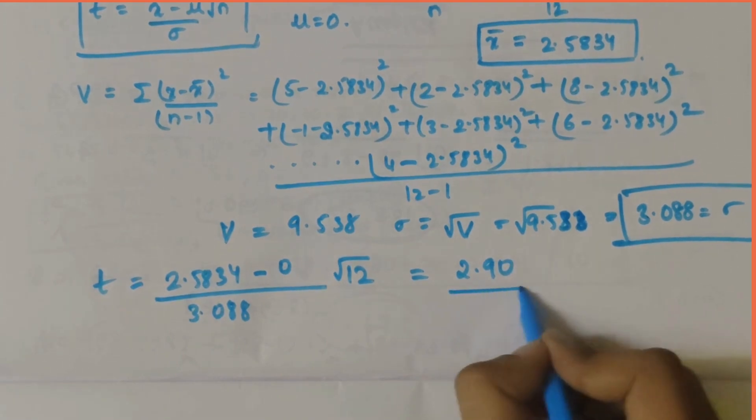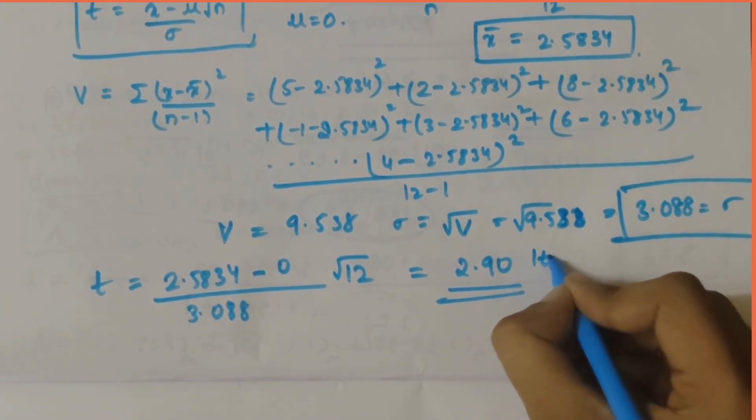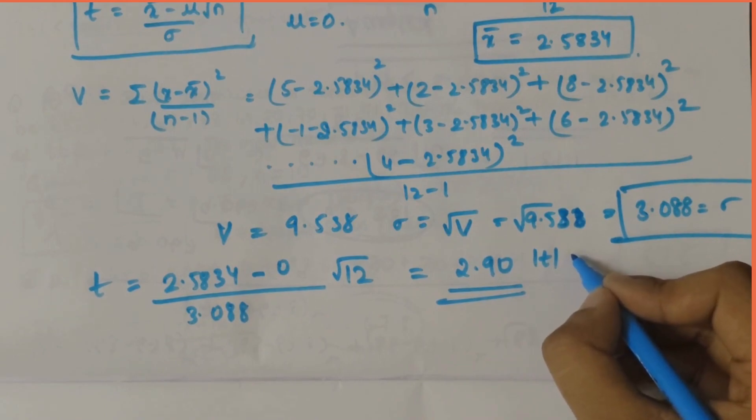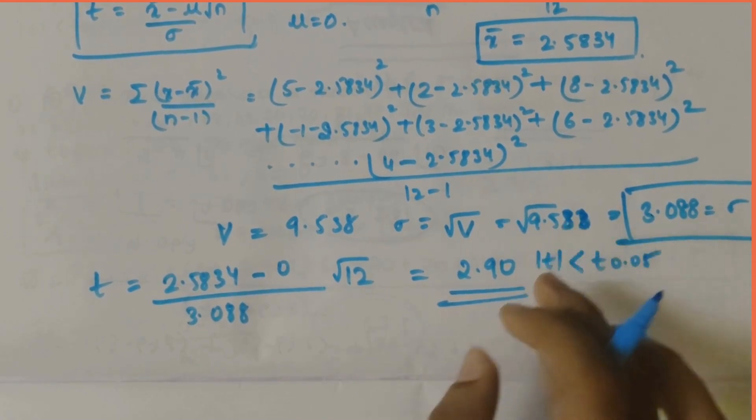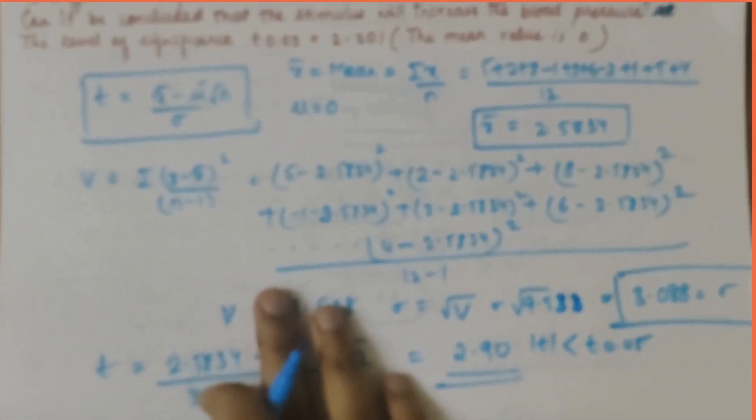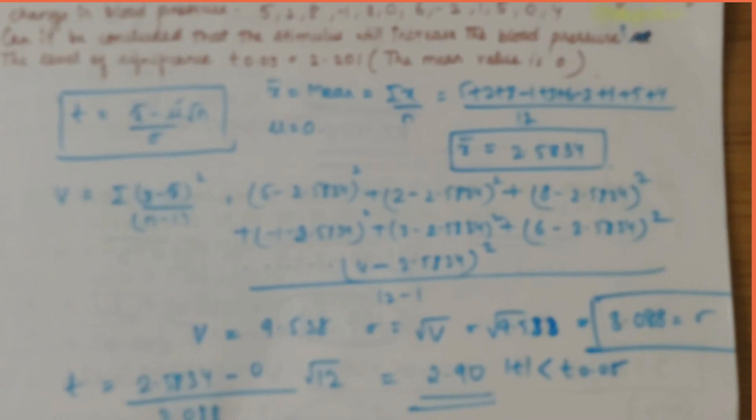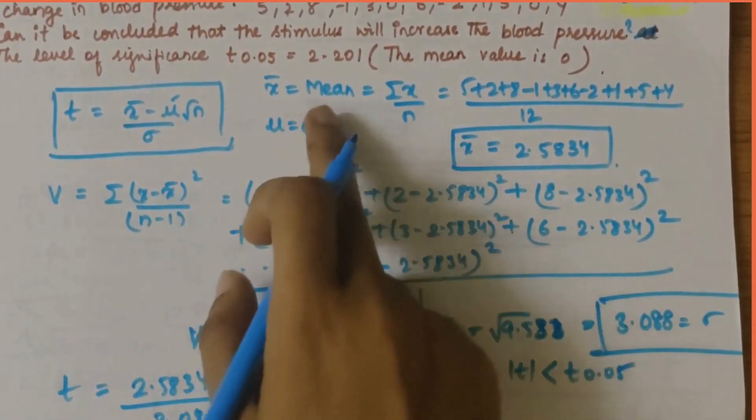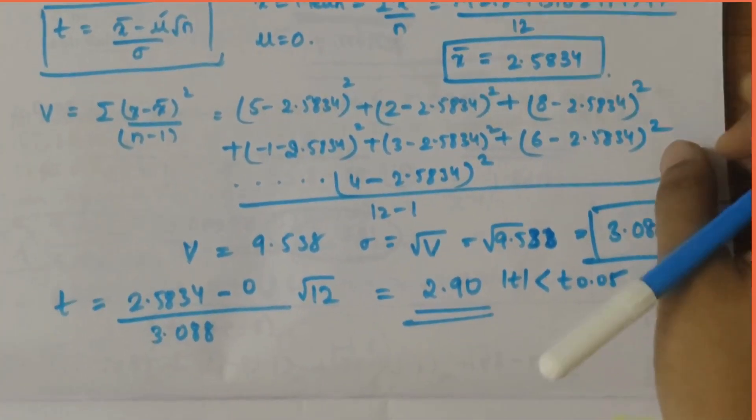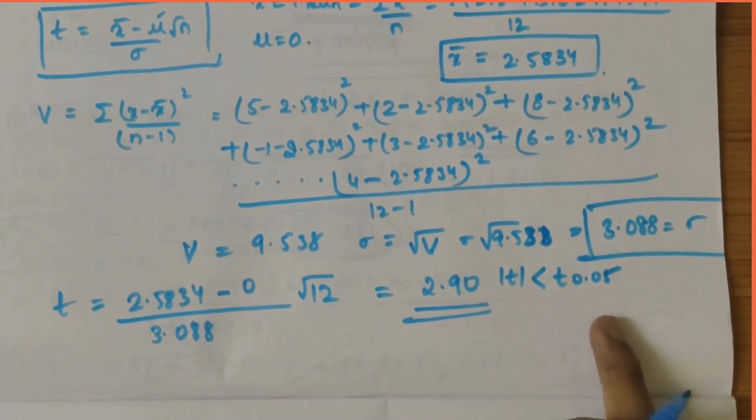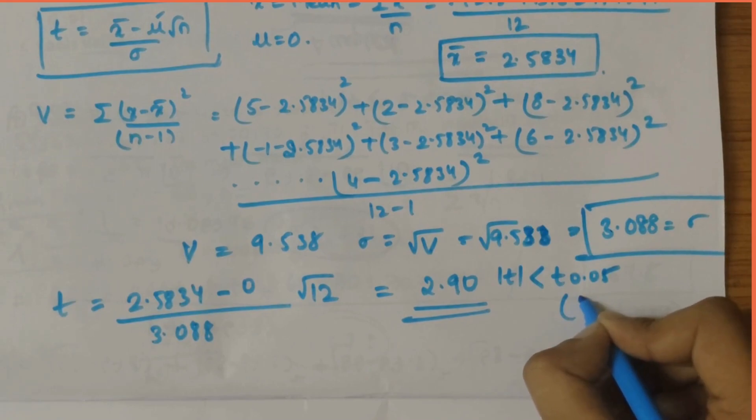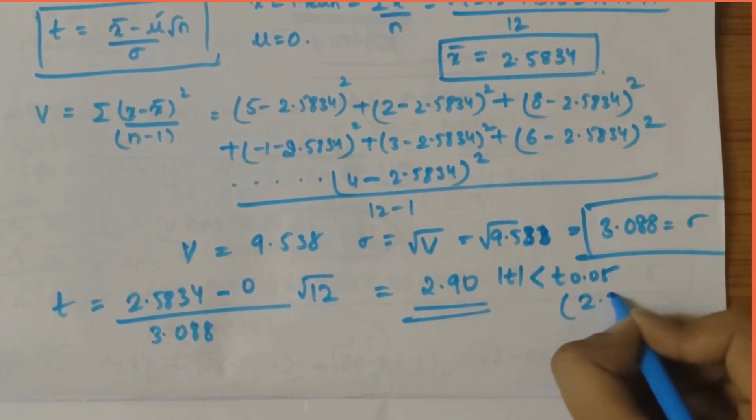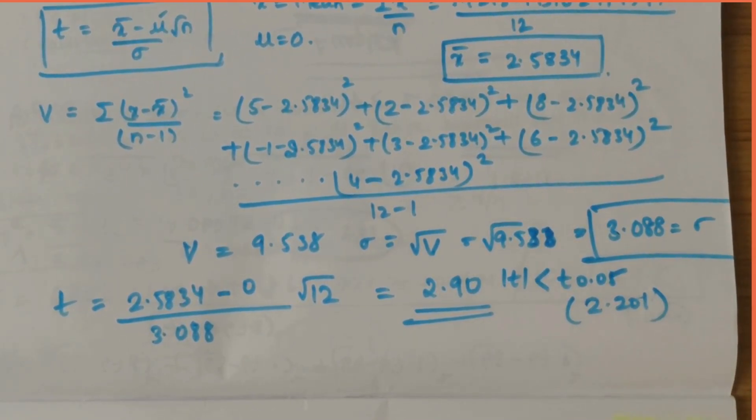This 2.90 value is what we have calculated, mod t. The condition is mod t should be less than t of 0.05. In this case they have given 0.05 as reference, the level of significance. Here, t value is greater than t of 0.05, that is 2.201.